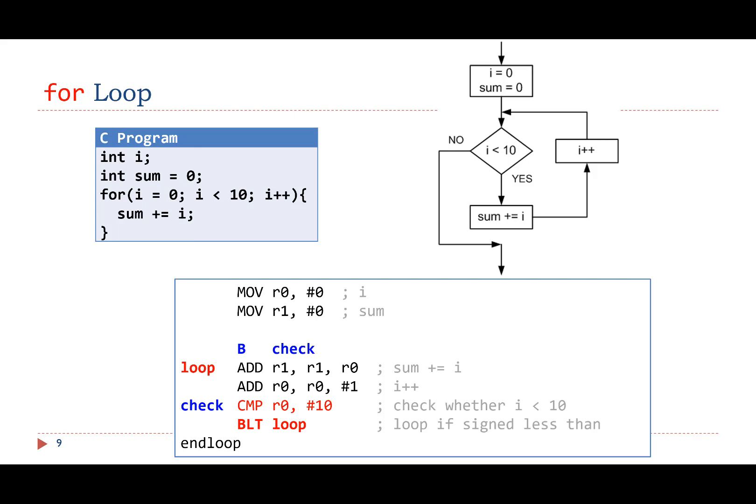Next, we will show you how to implement a for loop in assembly. This C program calculates the sum of the first 10 integers, starting with 0.